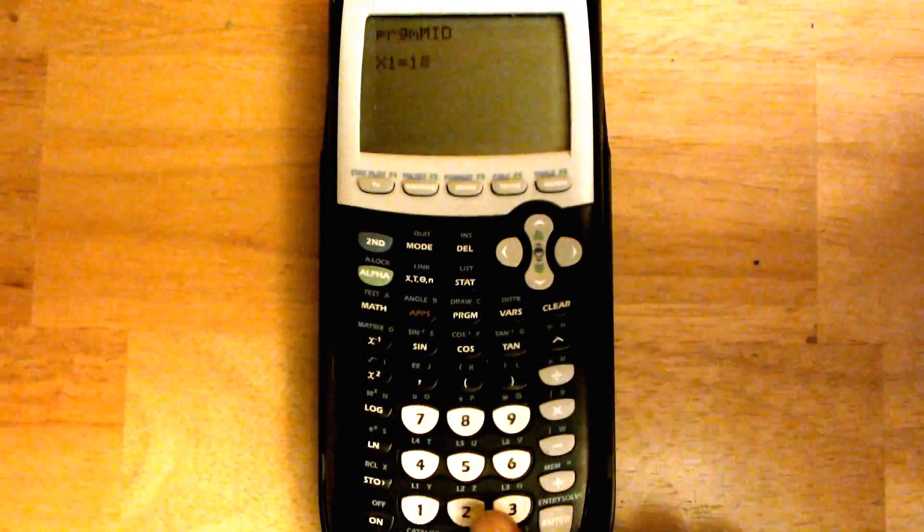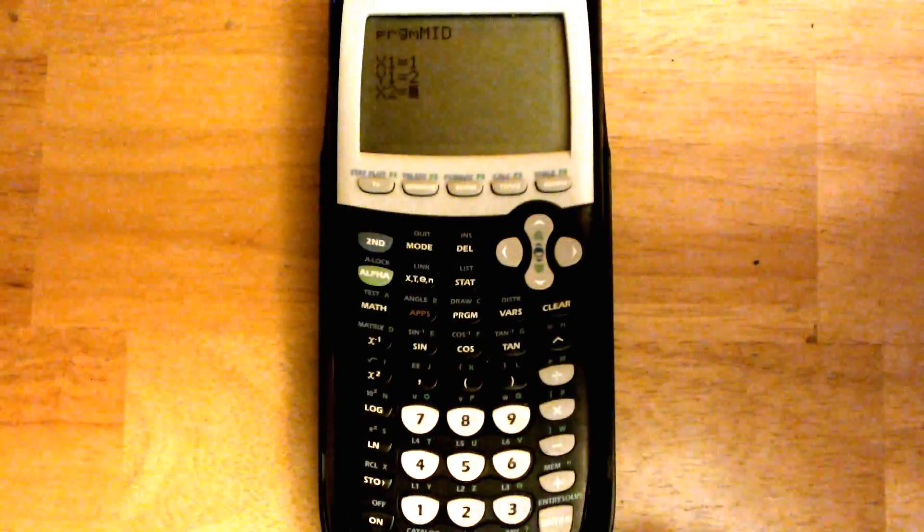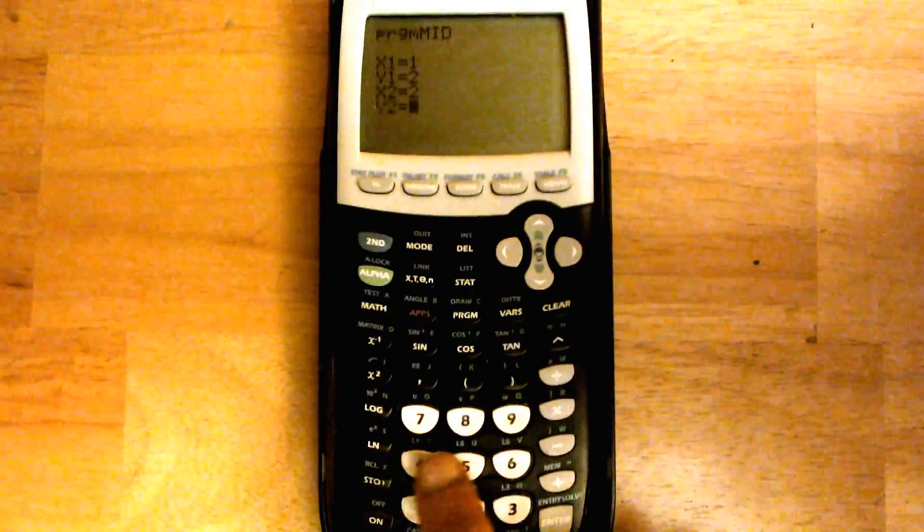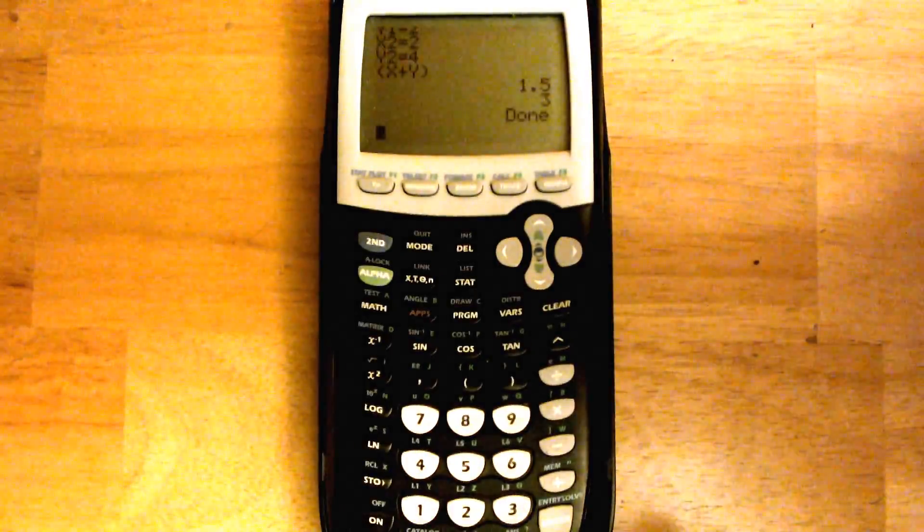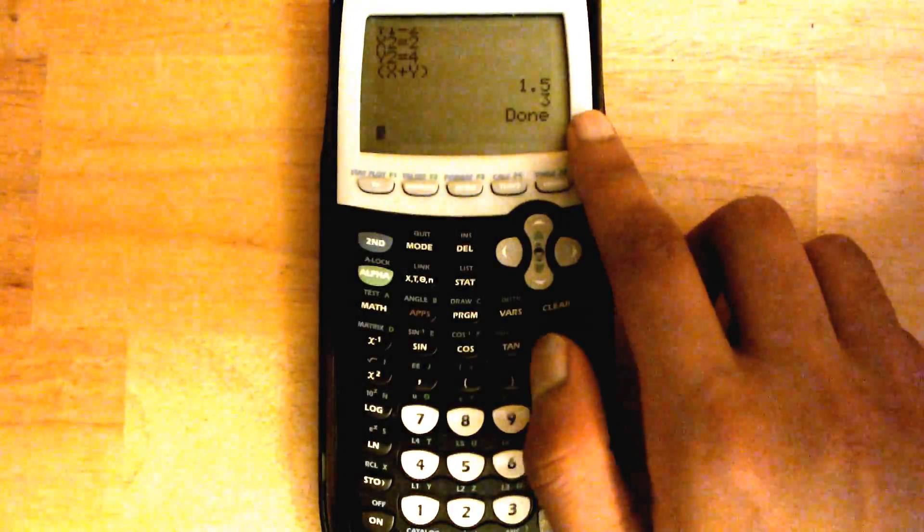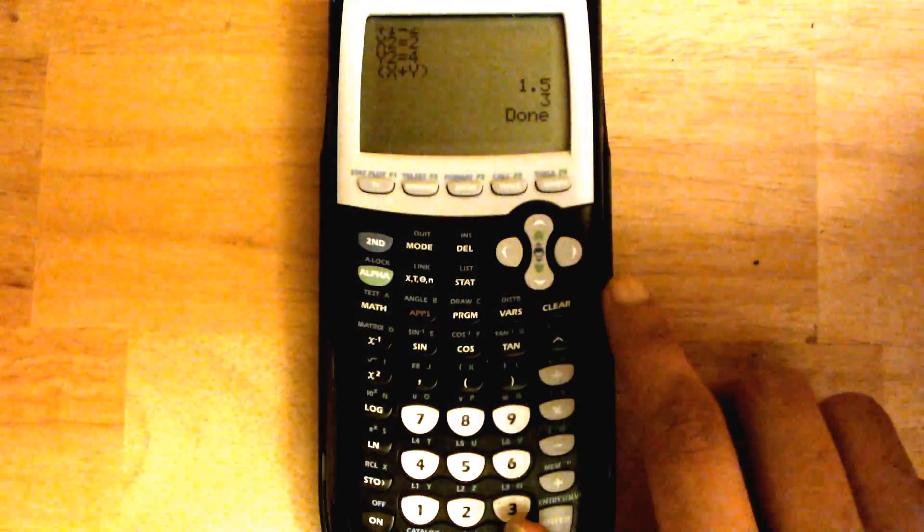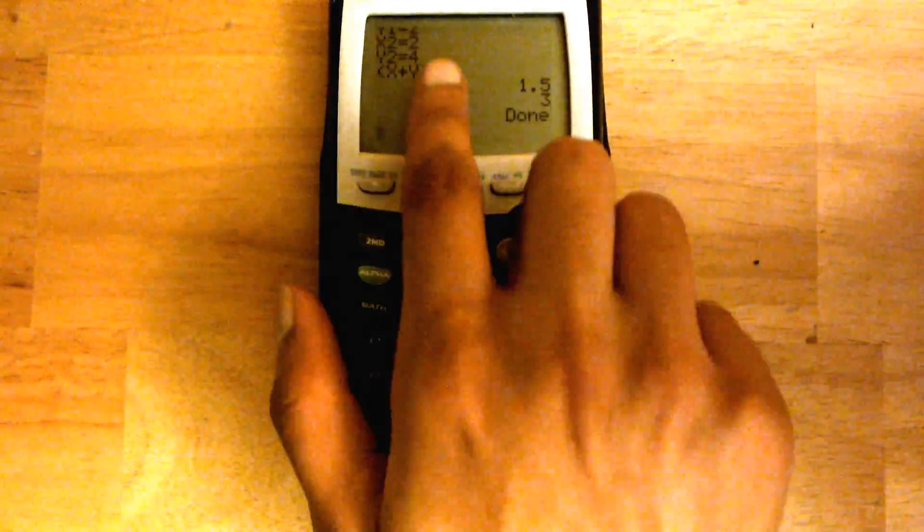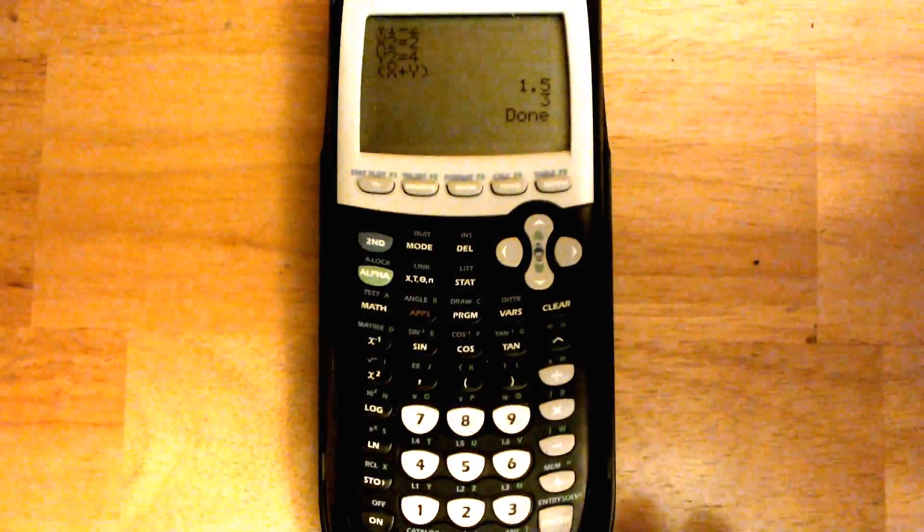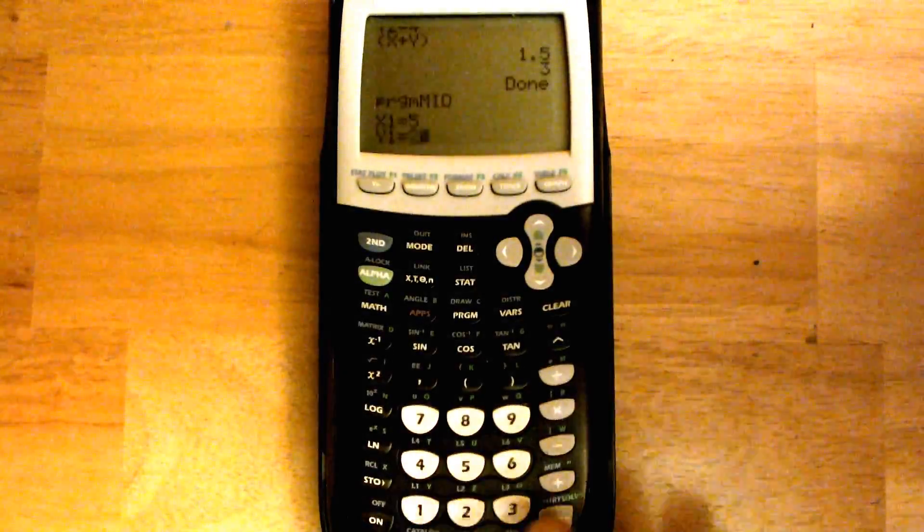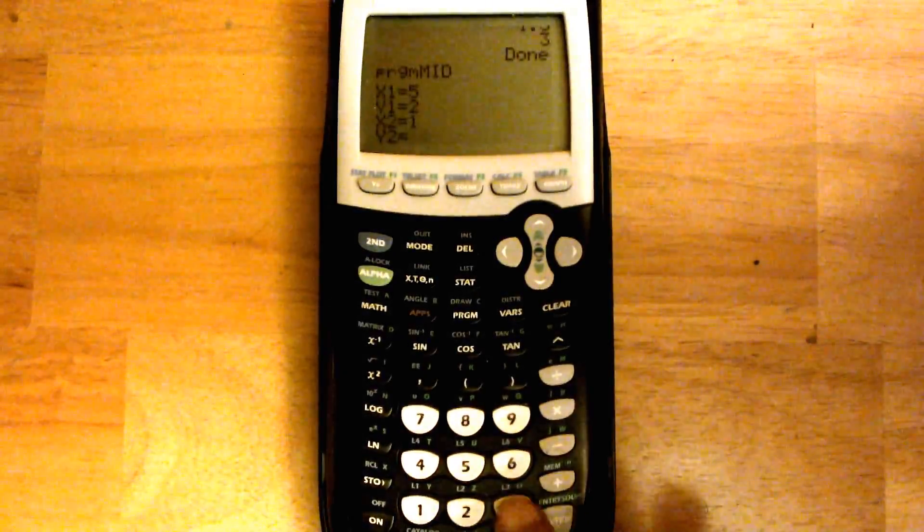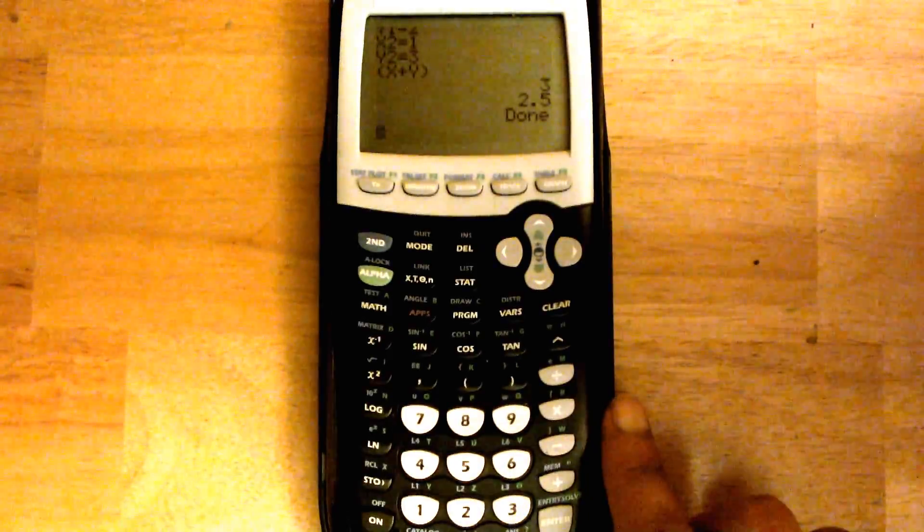So we're just going to put 1, 2, let's say 2, 4. And then it gives us the answer. First one's going to be the x coordinate. The second one's the y coordinate for the midpoint. And then if you messed up on any number here and you want to do it again, just hit enter again. And you can start over and put the correct numbers. And it'll give you the correct answer every time.